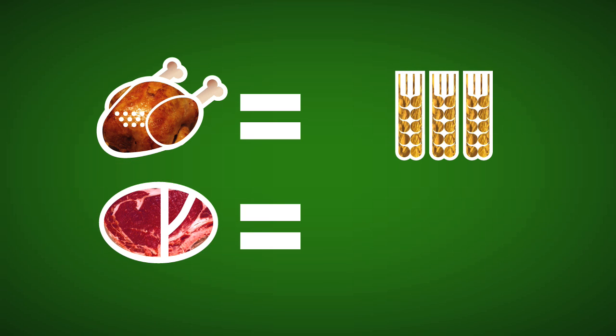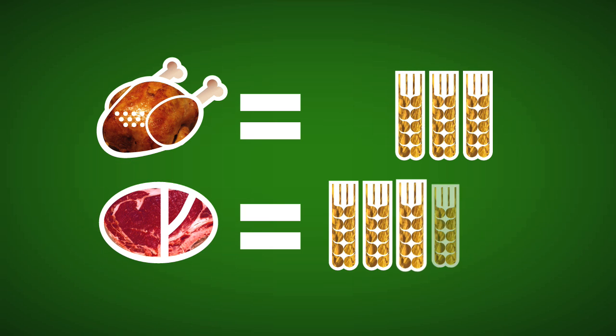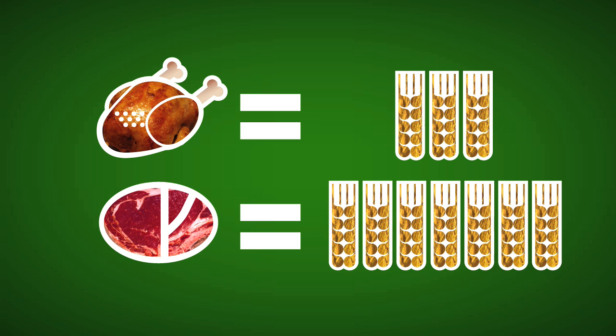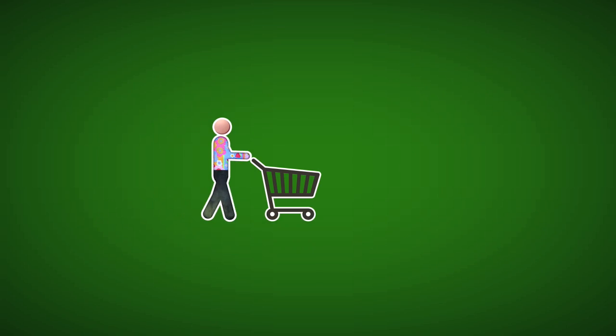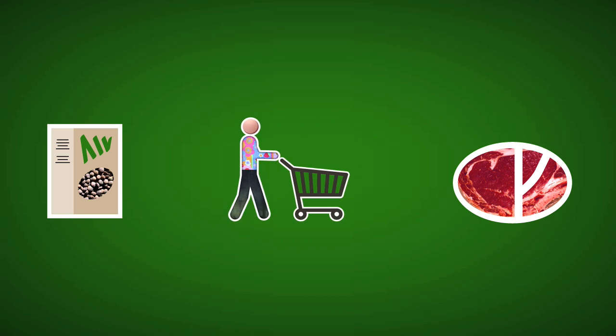And that changes everything. Because you need three kilos of grain to produce one kilo of poultry. And more than double that to obtain one kilo of beef.